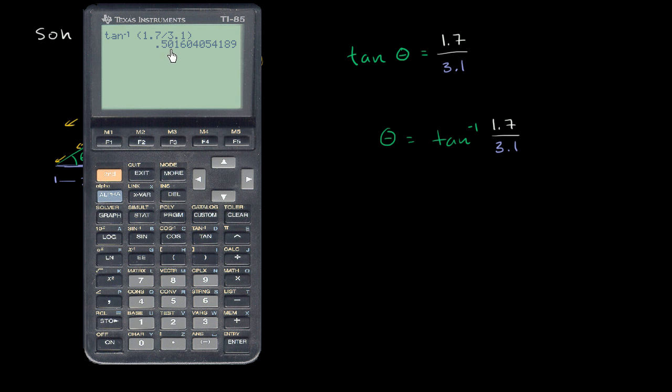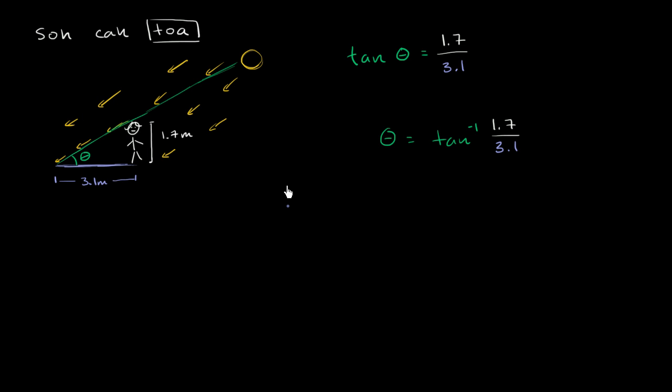And so if we were to round to the nearest hundredths, this would give us about 0.50. So this is approximately equal to 0.50 if we round to the nearest hundredths. That's the measure of this angle in radians.